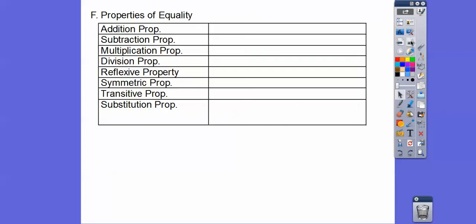Here are some properties of equalities, and we can write these in if-then form. The addition property says: if A equals B, then A plus C equals B plus C — we just added C to both sides. The subtraction property works the same: if A equals B, then A minus C equals B minus C.